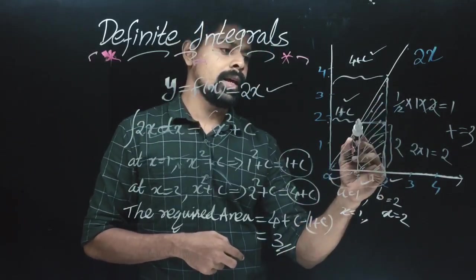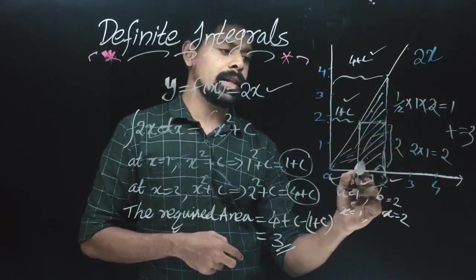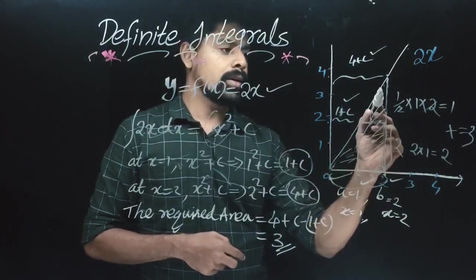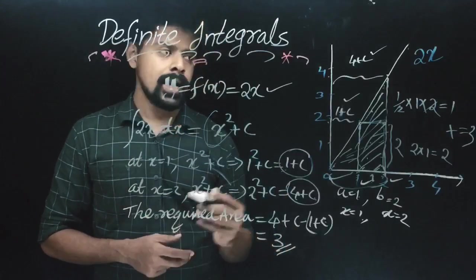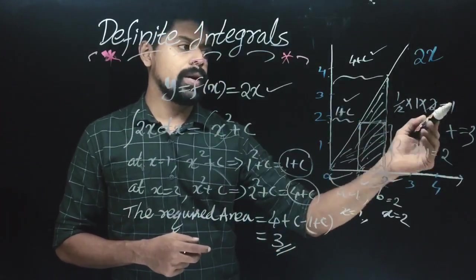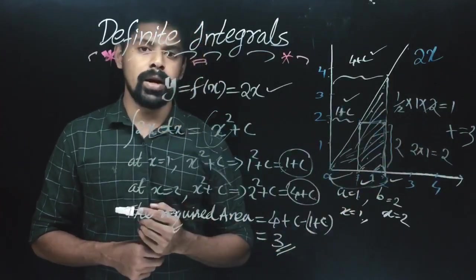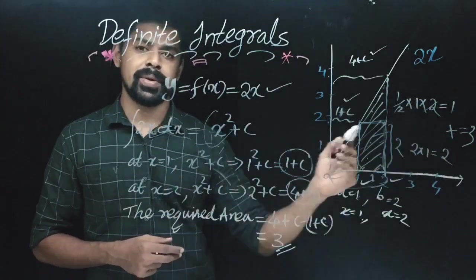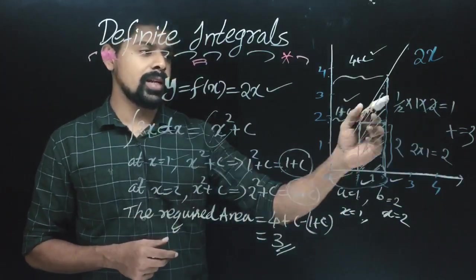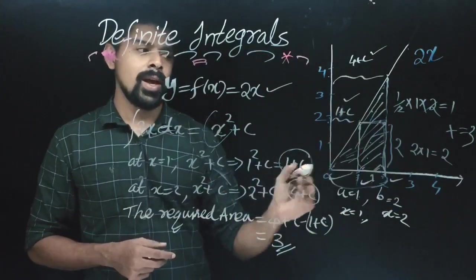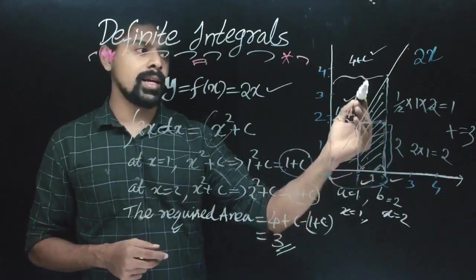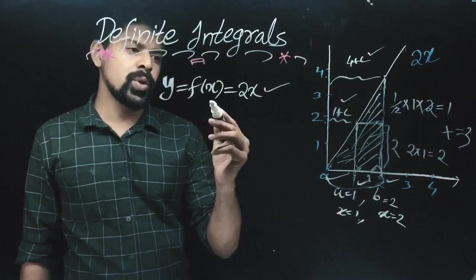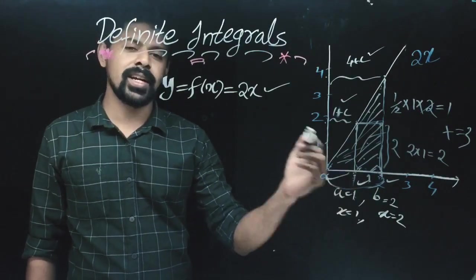This is what we wanted to confirm with the geometric method. This area is a rectangle plus a triangle. The rectangle area is 1, and 1 plus 2 is 3. So this area is 3. This is the geometric proof, and this is the definition of a definite integral.